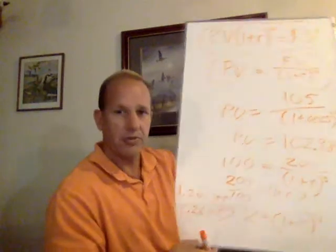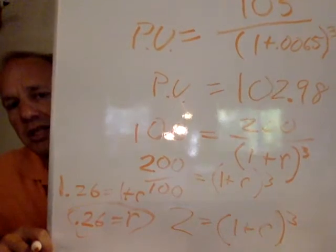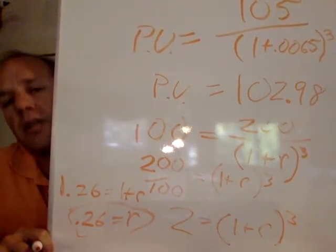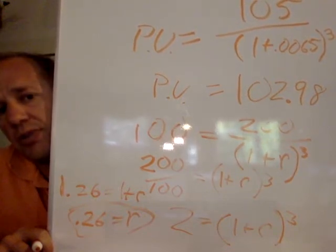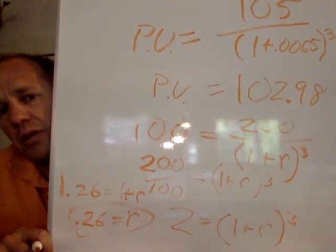Translating that to a percent: this person, who was indifferent between $200 in three years and $100 now, has a personal discount rate of 26%. That's how much more they value present consumption over future consumption — which is a very high rate. The average return over roughly the last 90 years for the S&P 500 is only about 10%, and the stock market is not risk-free like a CD. We can use this to infer things about people or compare different people's preferences. I hope you found that interesting and useful.